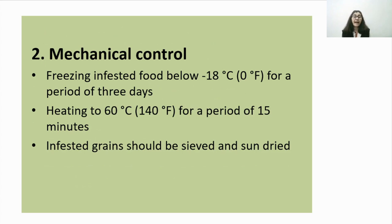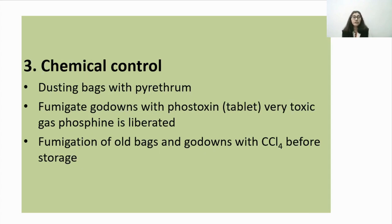The second method is mechanical control: freezing infested food below minus 18 degrees centigrade for 3 days is effective. Heating to 60 degrees centigrade for 15 minutes is more effective than freezing as it kills almost all stages of insects. Infested grains should be sun-dried. The third method is chemical control: dusting bags with pyrethrum is very effective and relatively safe as it is not very harmful to mammals and degrades fast. Fumigation of go-downs with phosphine-releasing tablets, and fumigation with carbon tetrachloride before storage, are also very effective.